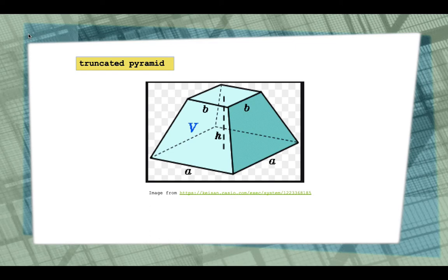A truncated pyramid is a result of cutting a pyramid by a plane parallel to the base and separating the part containing the apex. The person who transcribed one problem in the papyrus as shown in the figure assumed that